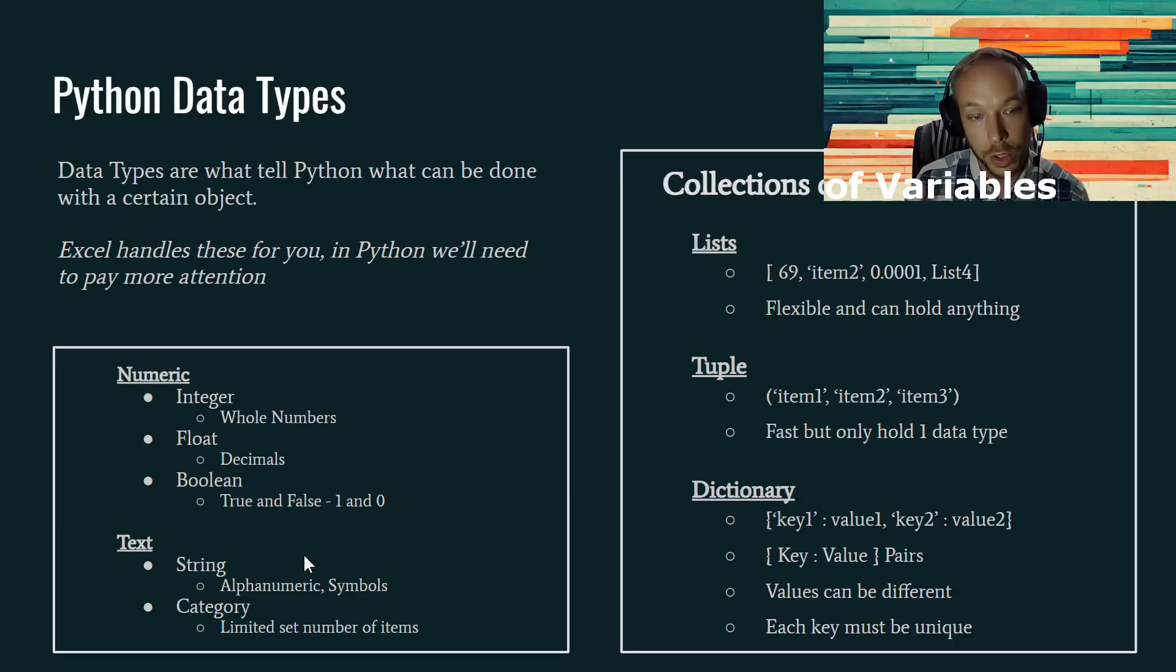There's also strings, which is a general string, which could be like a name or just any alphanumeric symbols, any combination of that. Another kind of category of text is category. So male, female, maybe the country, maybe the city. These repeat over and over again, and we can use this a lot in our data analysis.